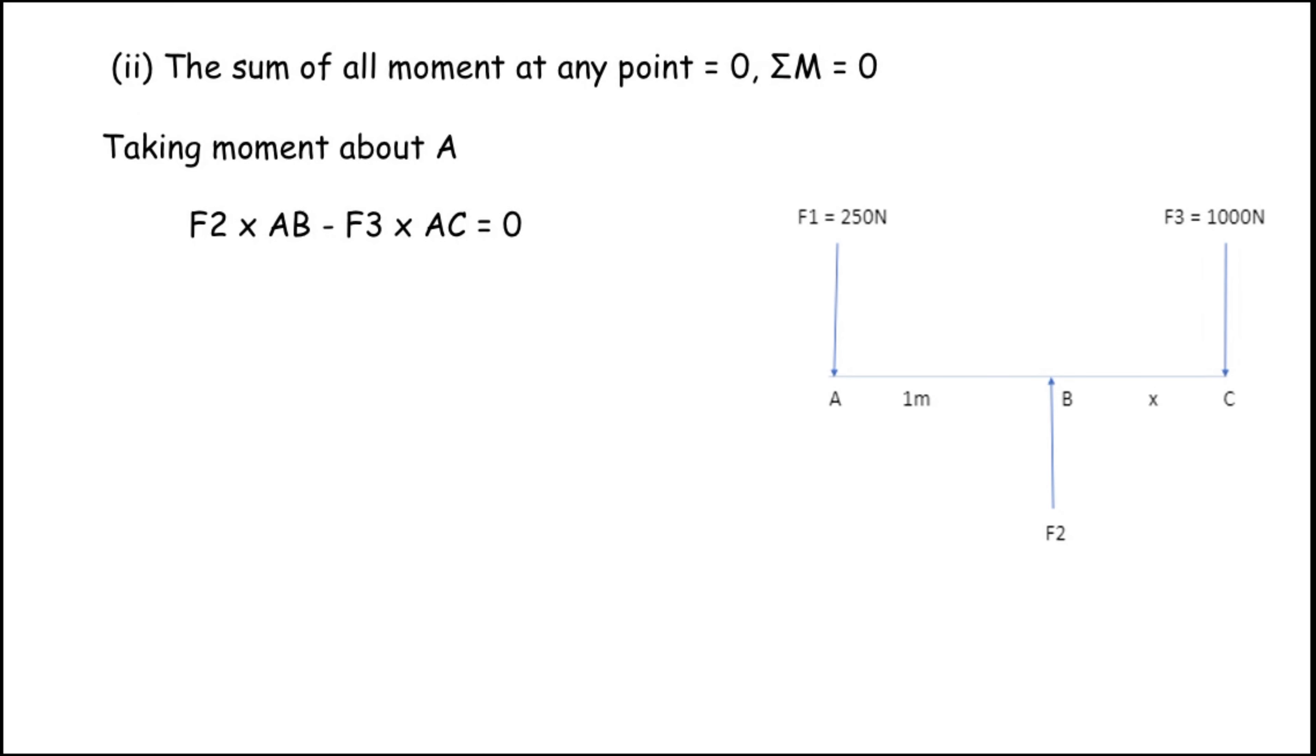So, now, substituting the value of F2 and AB, F3 and AC, 1250 into 1 minus 1000 into the AC value is 1 plus X. So, I substitute here 1 plus X. Now, the value of 1250 into 1 is 1250. The 1000 minus 1000 into 1 is minus 1000 minus 1000 into X is minus 1000X equals 0. And 1250 minus 1000 is 250 minus 1000X equals 0.